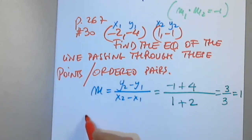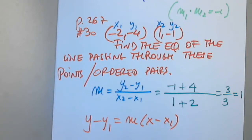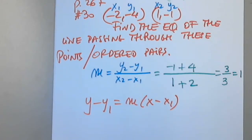So then I have y minus y1 equals the slope times x minus x1. This is the point-slope form. It doesn't matter which point you use — I'm going to use the first point. You can use the second point; maybe it's even easier to work with. We will all get the same answer. So, do you want to use the first point or the second point?